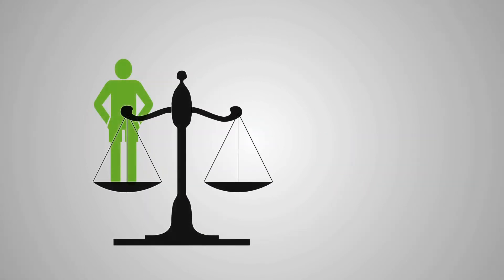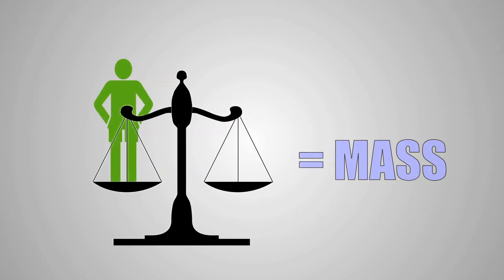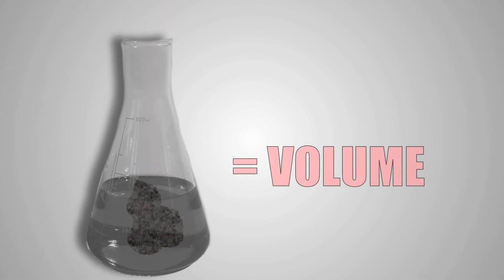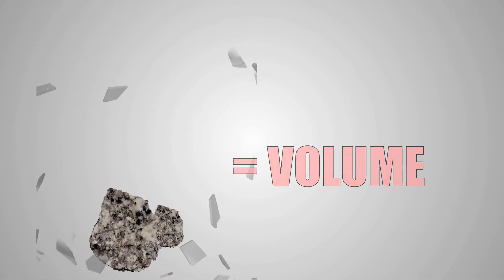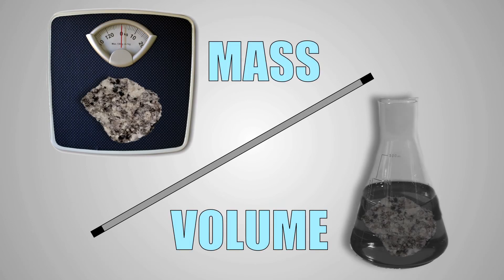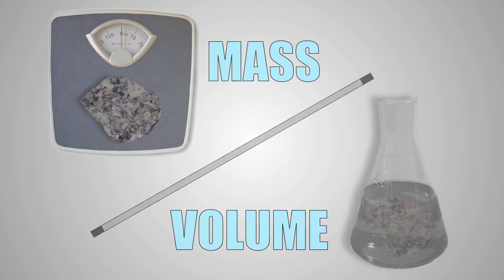During the lab, you were asked to take your metal and find its mass by using a scale. After that, you needed to calculate the volume. This was done by placing your metal in a graduated cylinder and observing how much water was displaced. Once your mass and volumes were gathered, all that was left to do was to divide the two and come up with the density.